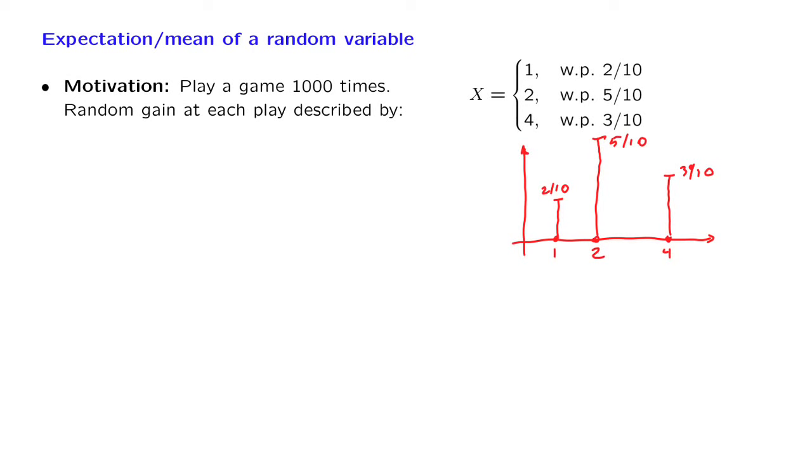How much do you expect to have at the end of the day? Well, if you interpret probabilities as frequencies in a thousand plays, you expect to have about 200 times this outcome to occur, and this outcome about 500 times, and this outcome about 300 times. So your average gain is expected to be your total gain, which is 1 times 200, plus 2 times 500, plus 4 times 300. This is your total gain, and to get the average gain, you divide by 1,000.